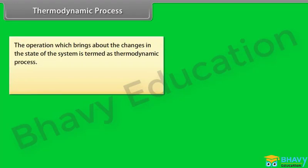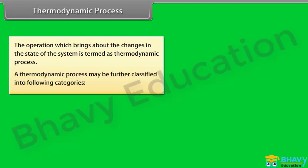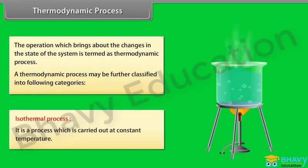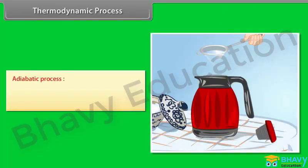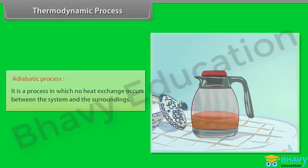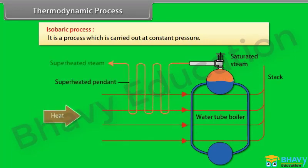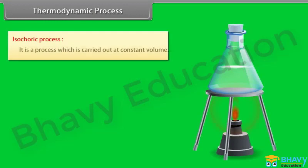Thermodynamic process: the operation which brings about the changes in the state of the system is termed as a thermodynamic process. A thermodynamic process may be further classified into the following categories: isothermal process — a process which is carried out at constant temperature; adiabatic process — a process in which no heat exchange occurs between the system and the surroundings; isobaric process — a process which is carried out at constant pressure; and isochoric process — a process which is carried out at constant volume.